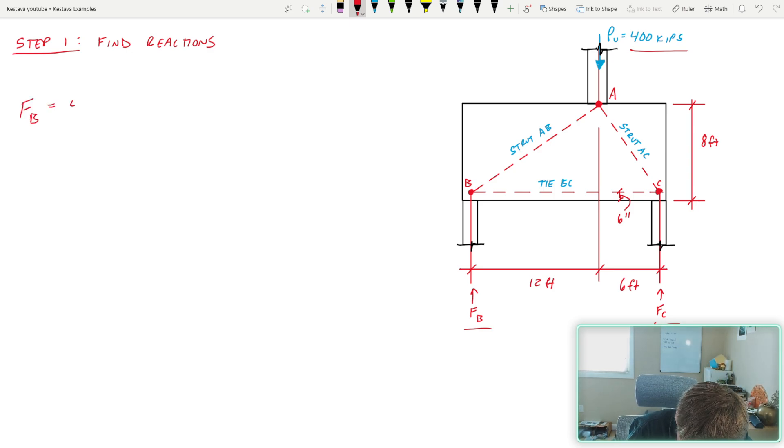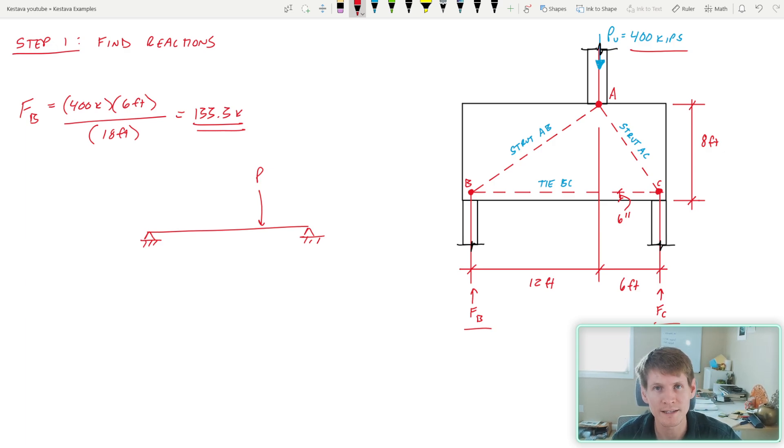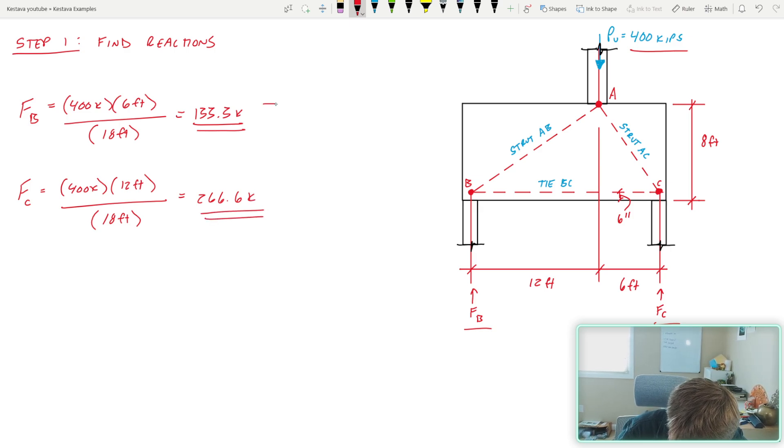F sub B is equal to 400 kips times six feet divided by 18 feet, which gets us 133.3 kips. Now this is simply boiling down that figure that we have over there into a simple supported beam with a point load on it. And you need to end up getting your reaction at either end that, if you don't know off the top of your head, you can head over to the ACI manual with the shear moment and deflection diagrams chapter or section, where they have those equations laid out for this particular load scenario. And F sub C is equal to 266.6 kips. As just a double check, both of those should add up back to your original singular axial load of 400 kips, which they do. So you're good. I know rounding wise, 0.3 and 0.6, we're missing 0.1 kip, but that's just a rounding error.